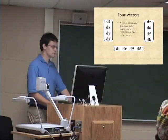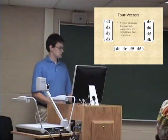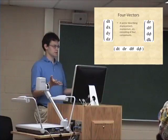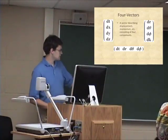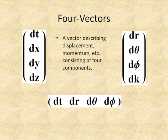I'll start off with four-vectors. Some of you may have seen vectors in introductory physics courses. A vector is basically something that describes displacement or momentum that has four different components to it. As you can see, there's an X, a Y, and a Z — those are just normal Cartesian positions — and then this four-vector also includes time.